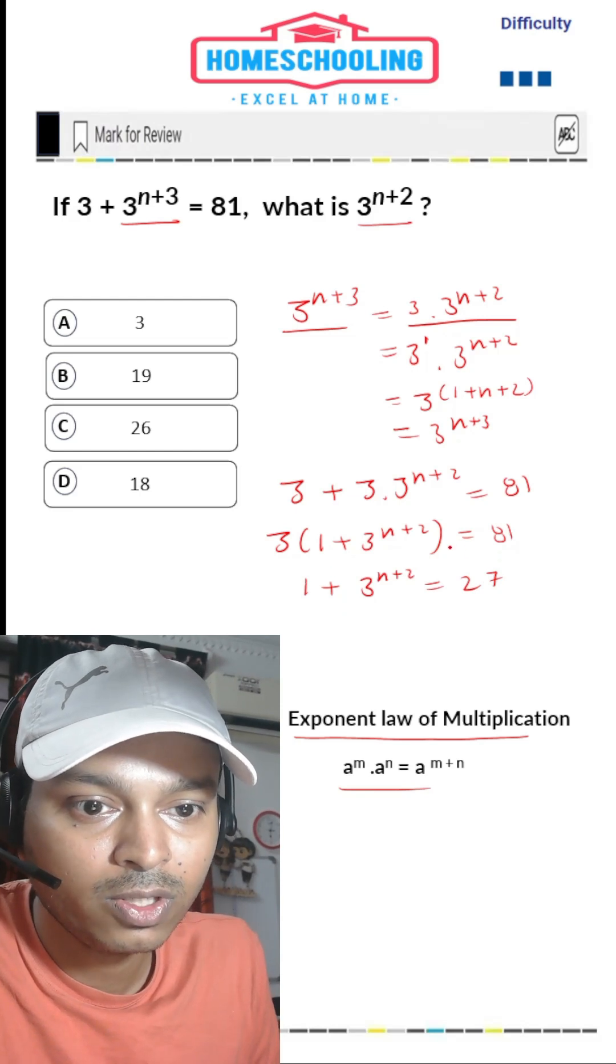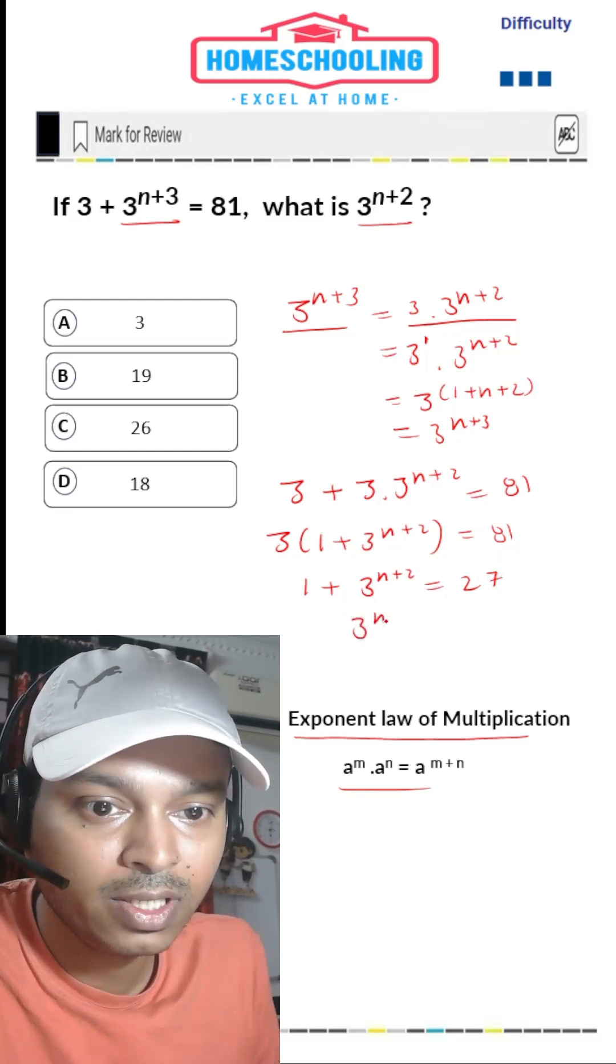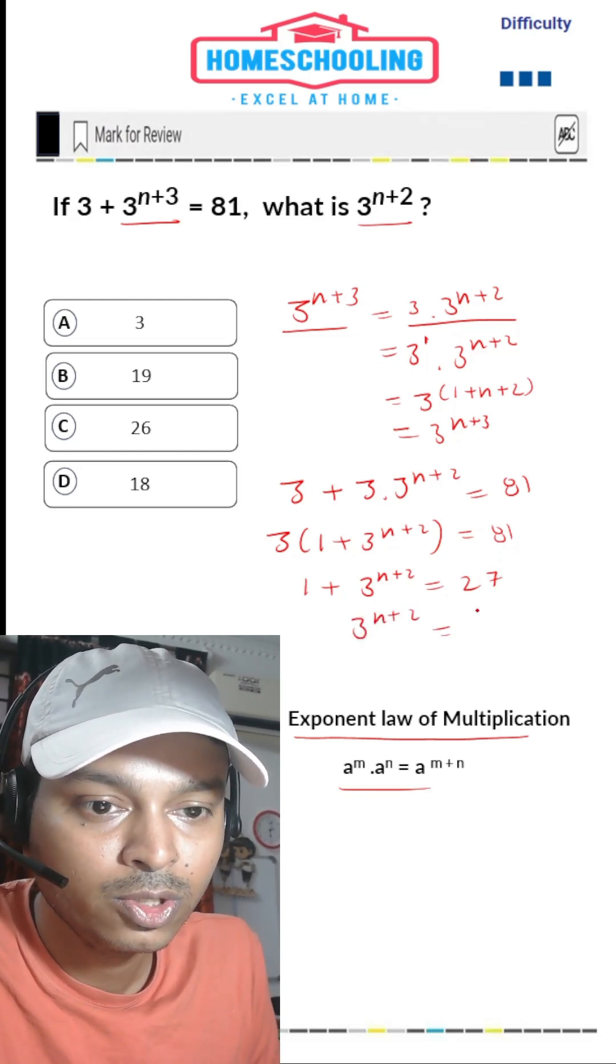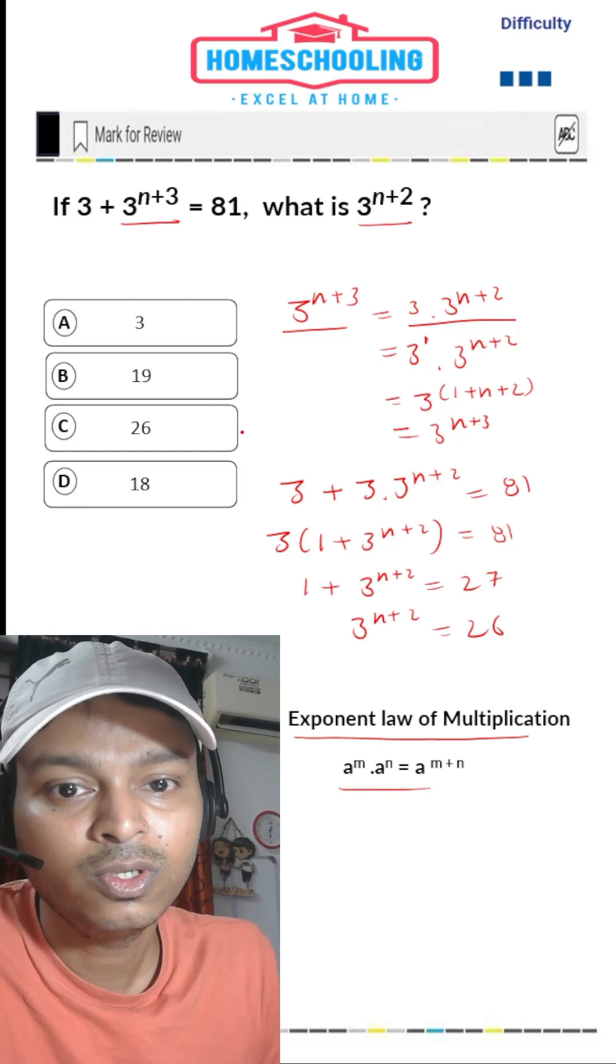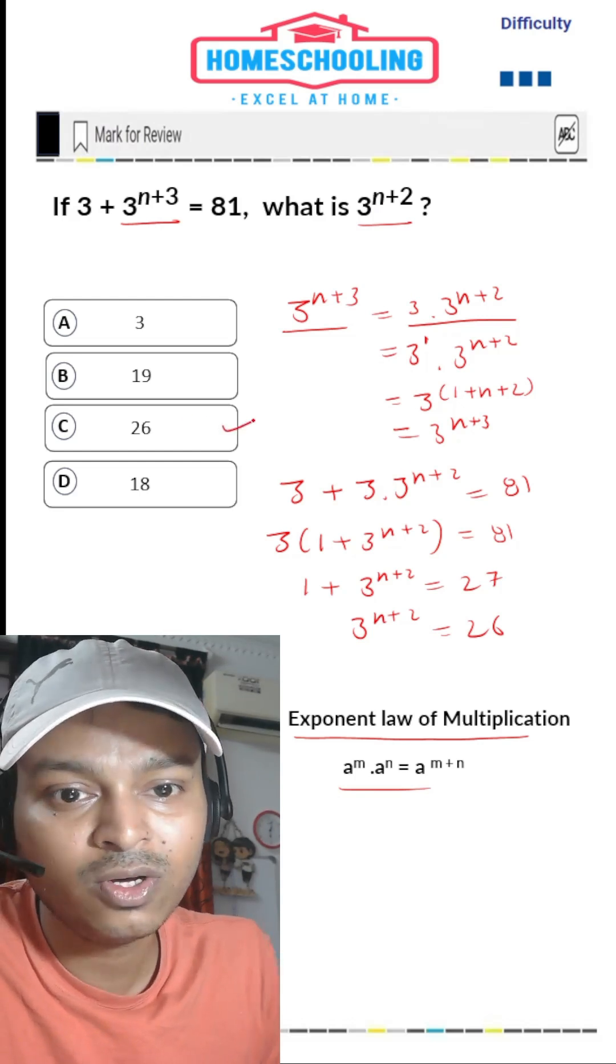I'll take one to the other side. So 3^(n+2) equals 27 minus 1, that is 26. We have to find what is 3^(n+2). So option C, 26, is your correct answer.